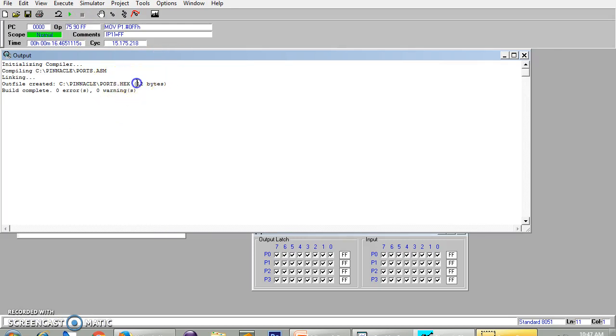Now I will compile the file. You will see there are no errors, no warnings. The size of code is 12 bytes and this is the hex file generated. I can download this file onto the microcontroller directly also.